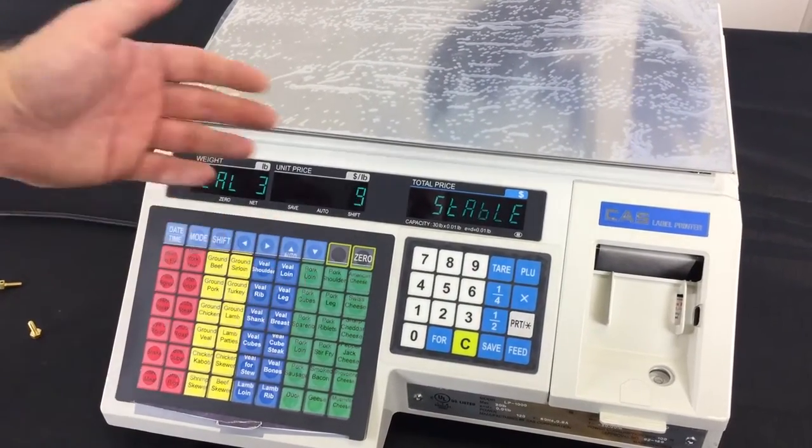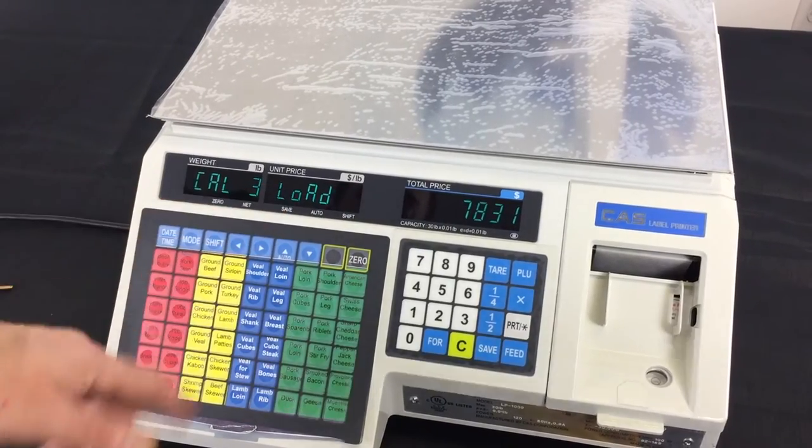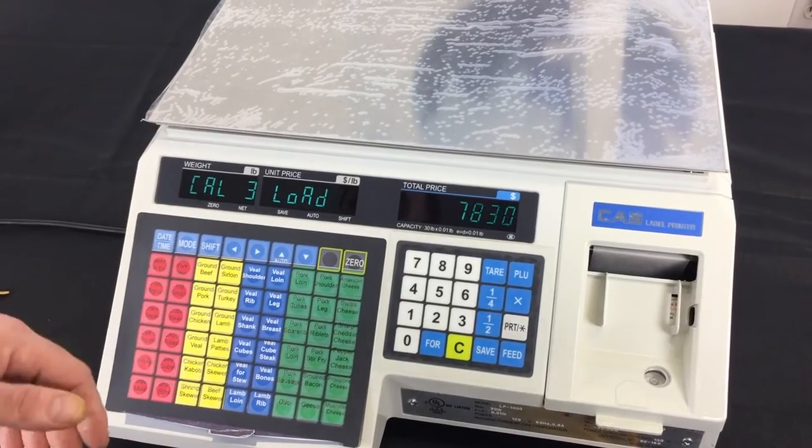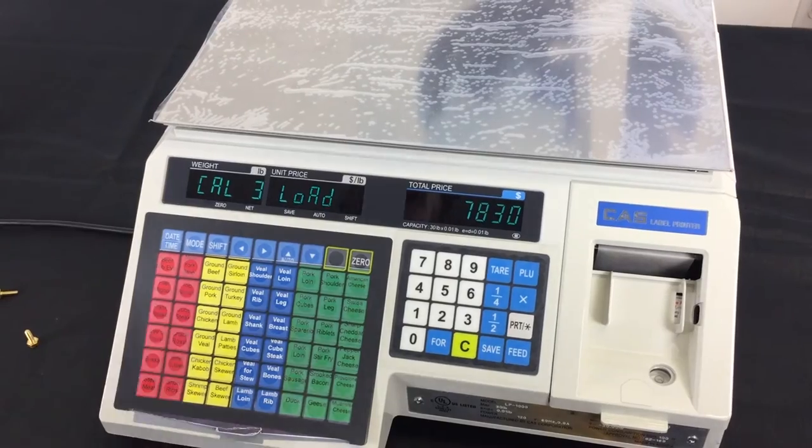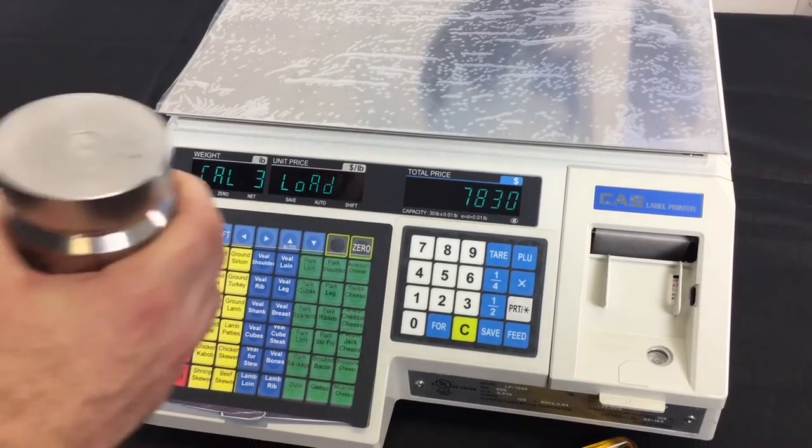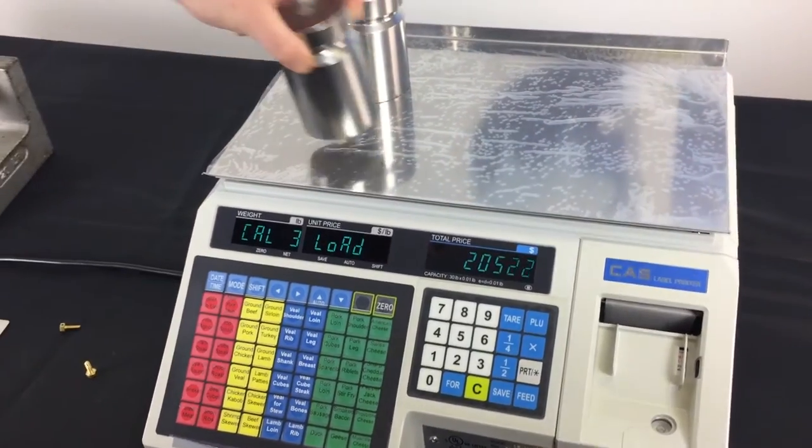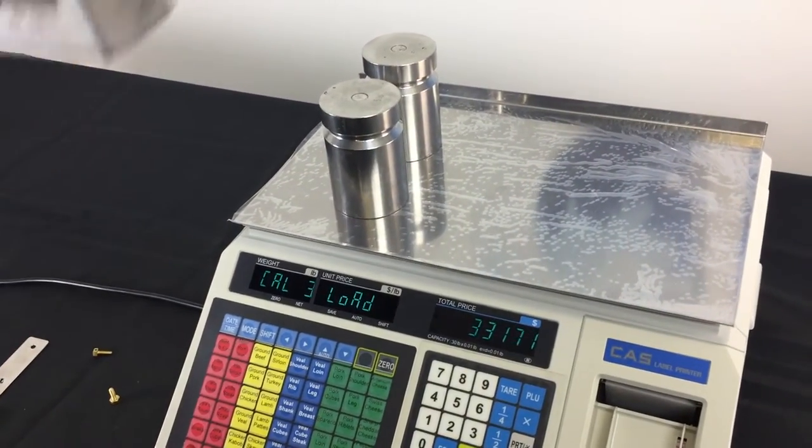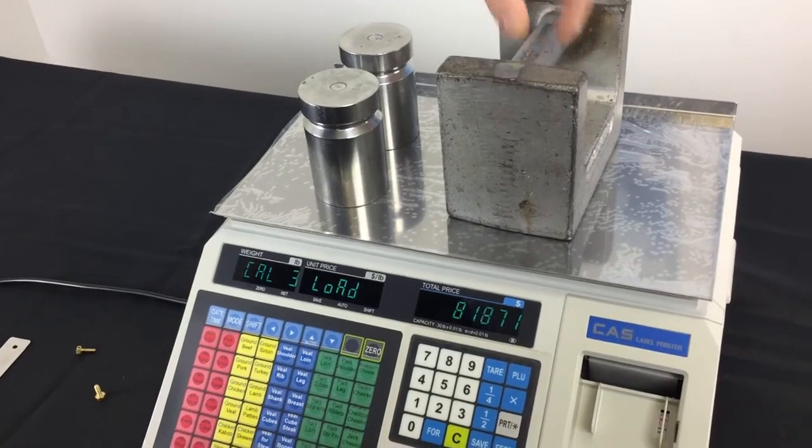It'll count up, and after it stabilizes it'll go to load. Now that we're at load, we're ready to calibrate. We're gonna need 30 pounds of weight for an accurate calibration of the LP-1000 end. I'm gonna place my weight on the scale: 5 pounds, 10 pounds, and 20 pounds to make 30.